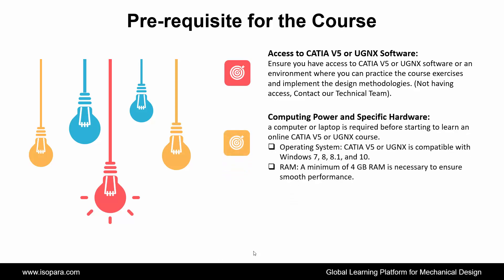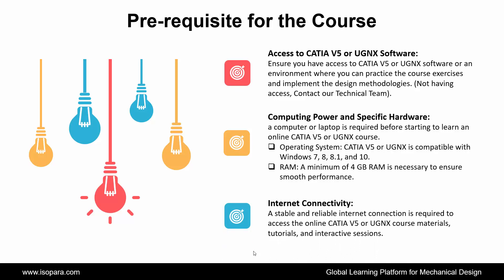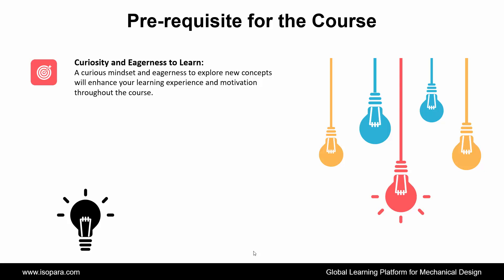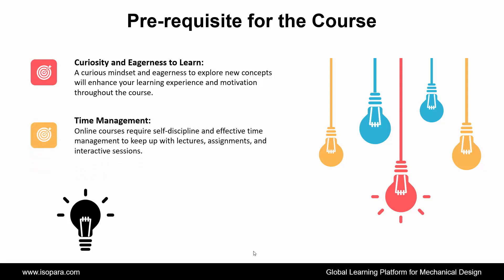Next is Computing power and specific hardware — a computer or laptop is required before starting. The operating system must be compatible with Windows 7, 8, 8.1, and 10. A minimum of 4 GB RAM is necessary to ensure smooth performance. Next is Internet connectivity — a stable and reliable internet connection is required to access the online course materials, tutorials, and interactive sessions. Next is Curiosity and eagerness to learn — a curious mindset and eagerness to explore new concepts will enhance your learning experience and motivation throughout the course. And the last is Time management — online courses require self-discipline and effective time management to keep up with lectures, assignments, and interactive sessions.